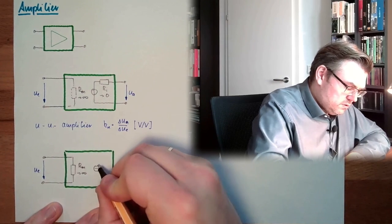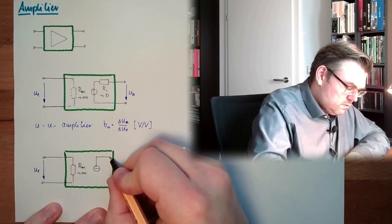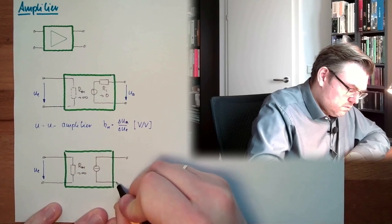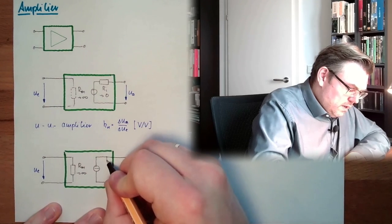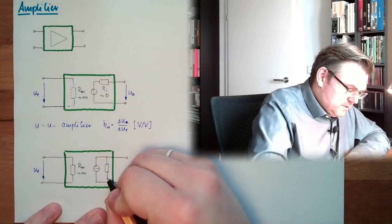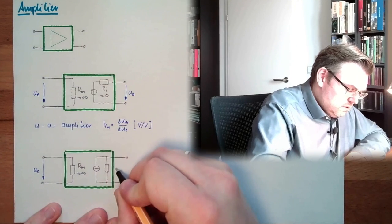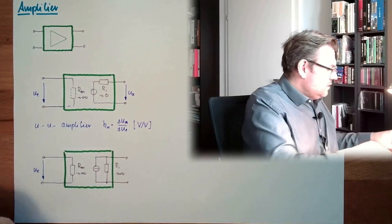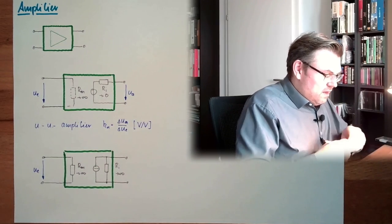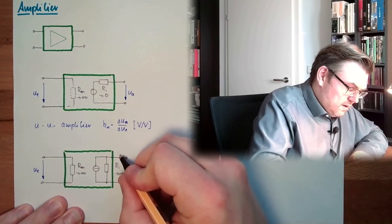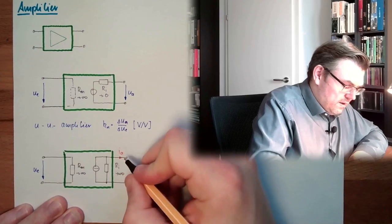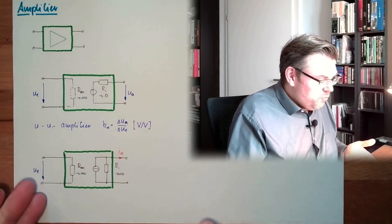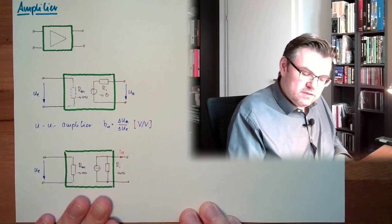So, there is a current source. Also, here I have an internal resistor. And this Ri here shall be unlimited, because here I have an Ia, output current. Here the input is voltage and the output is a current signal.